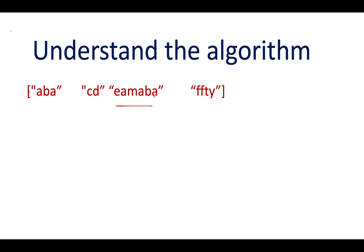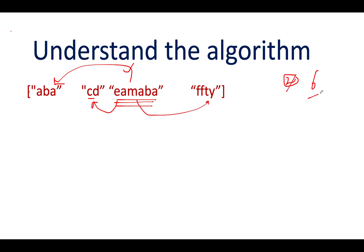Next we have 'eamaaba'. We compare it with 'aba' — 'eamaaba' is not a subsequence of 'aba' because 'aba' is shorter, so it's a happy case. Next, 'eamaaba' versus 'cd' — also not a subsequence, happy case. Next versus 'ffdy' — not a subsequence either. That means we found another string which is not a subsequence of any other string. Its length is 6. The previous length was 2, so 6 is greater — the answer becomes 6.